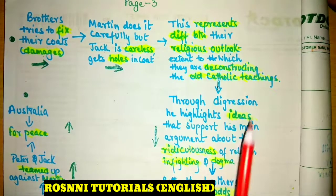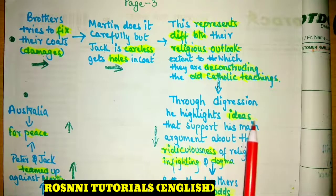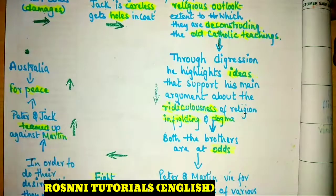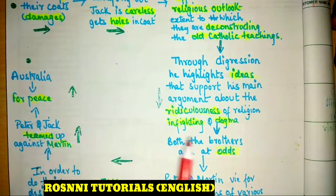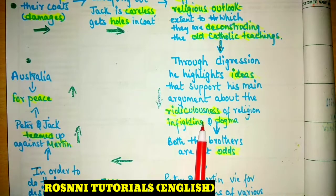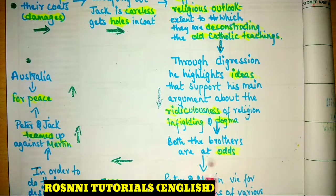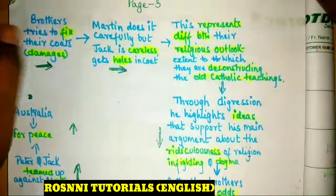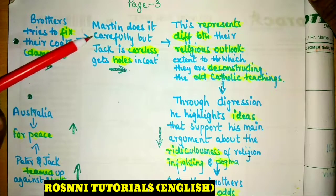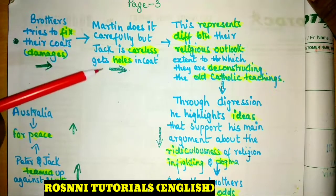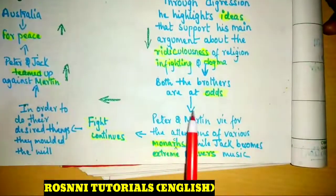According to requirement, in the digression the writer highlights ideas that support his main argument about the ridiculousness of infighting over dogmas. The fixed mindset is being discussed here — the idea that ideas should change with the time. The writer explains this to readers. The brothers' mindset was always found at odds.